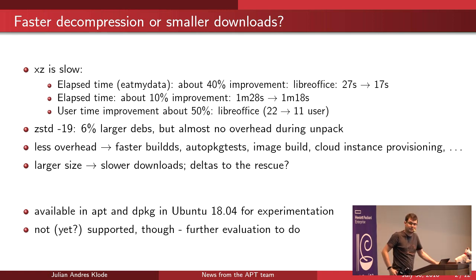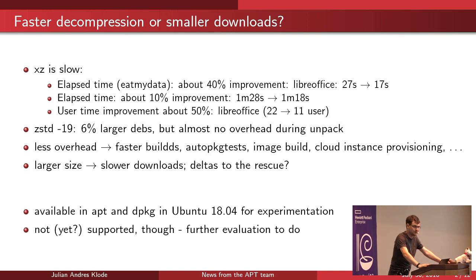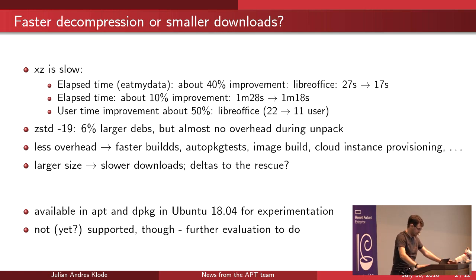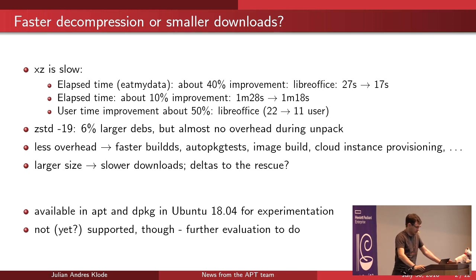If you use the highest compression level XZ has in normal mode, which is 19, the file size is only 6% larger, which basically means that downloads will be 6% slower at the same connection speed. But that's a problem if you have a slow connection. For upgrades, we can solve the problem using delta debs.